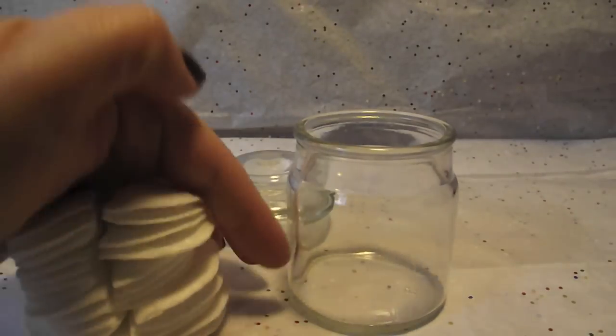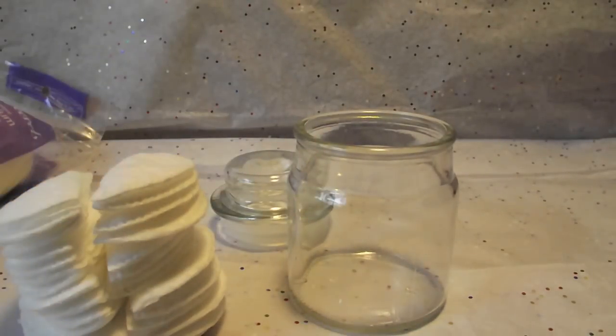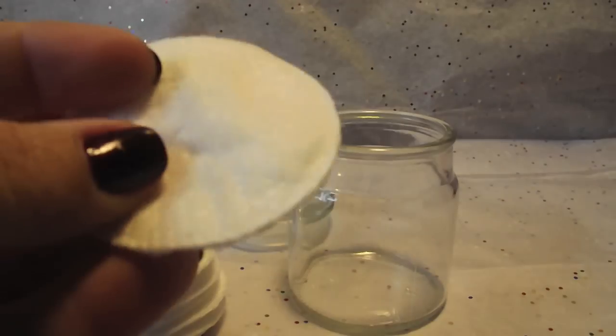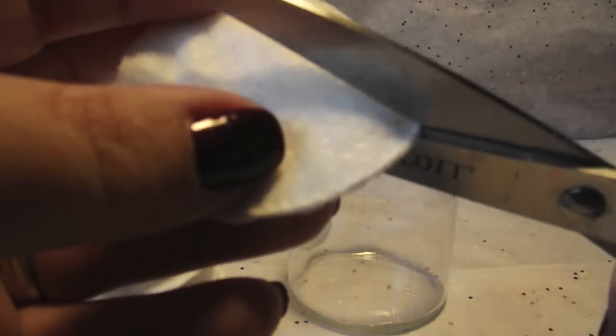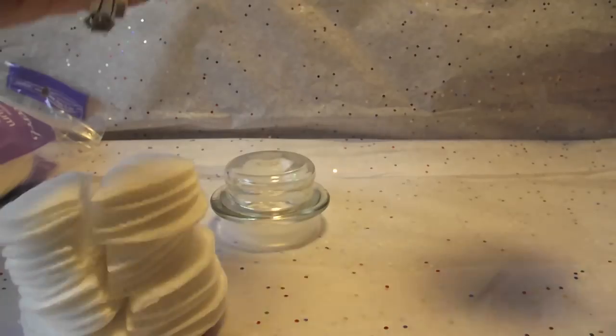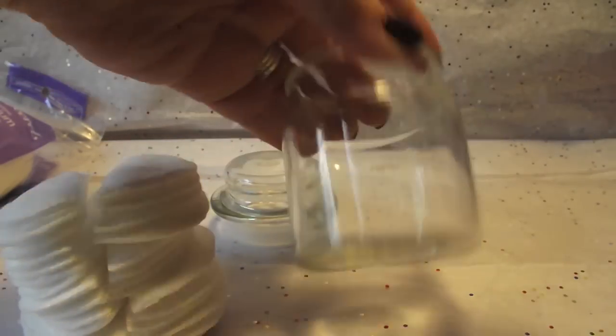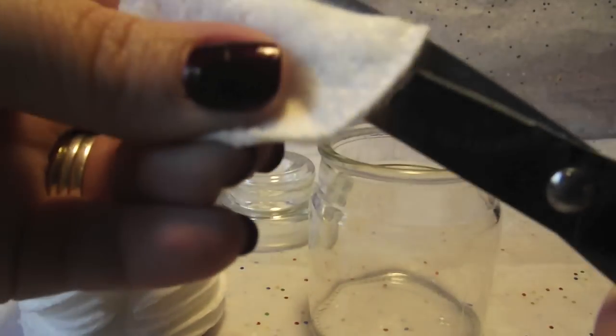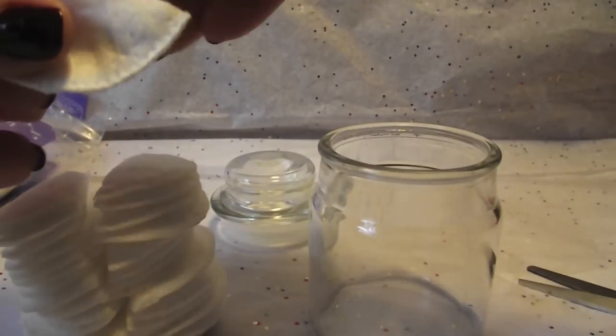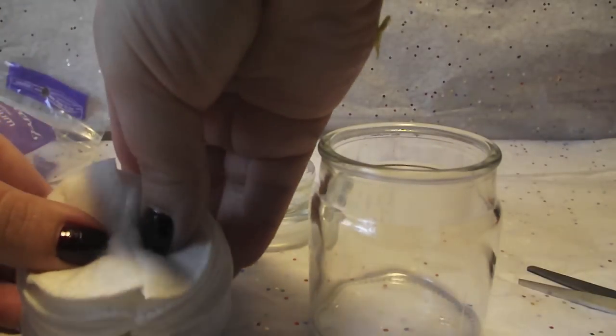So all you're going to do is you're going to take your rounds like that and you're just going to take them and I cut mine in half but you don't have to and you're just going to make sure that your rounds are roughly about the same size as the bottom of that so that they can fit in there. So you're just going to take them and you're just going to cut them in half or fourths if you want. For me half works pretty good.